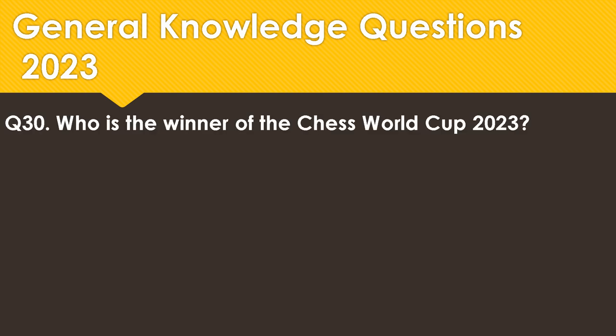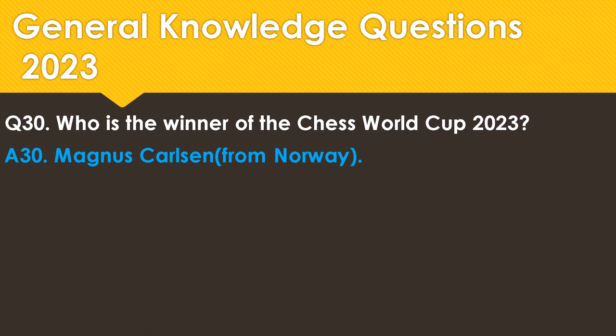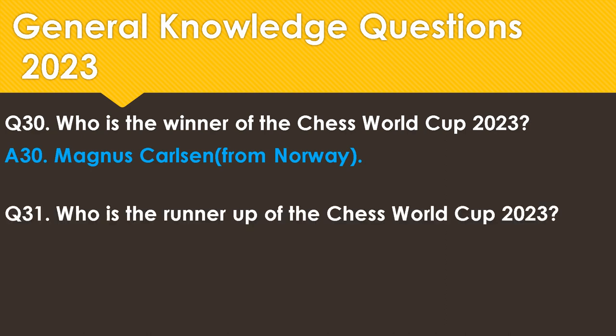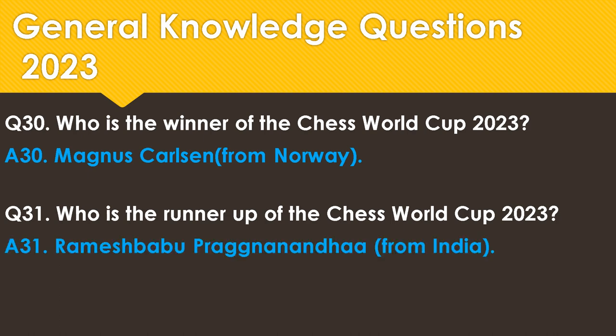Who is the winner of the Chess World Cup 2023? It's Magnus Carlsen from Norway. Who is the runner-up of the Chess World Cup 2023? It's Rameshbabu Praggnanandhaa from India.